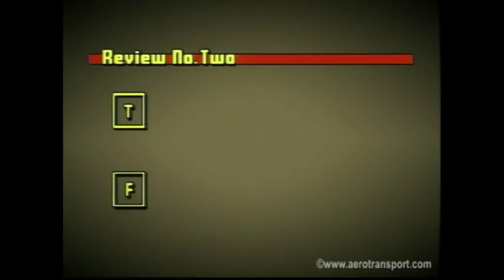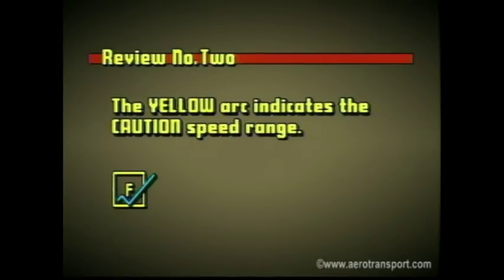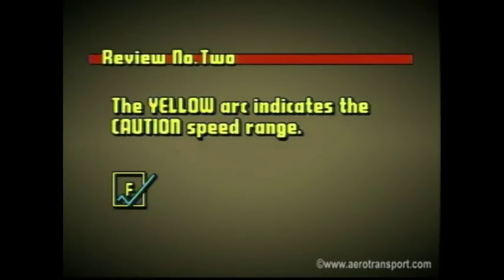True or false? An aircraft can generally be operated safely in the yellow arc on the airspeed indicator. False. The yellow arc indicates the caution speed range, which means the aircraft may only be flown at this airspeed in smooth air. Since it is difficult to predict turbulence, the aircraft should never be flown intentionally in this range.